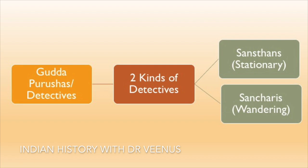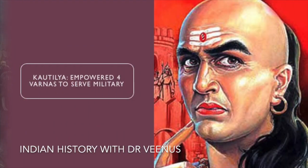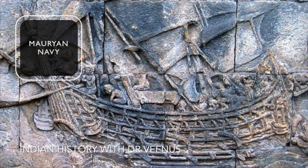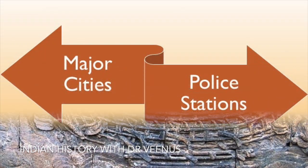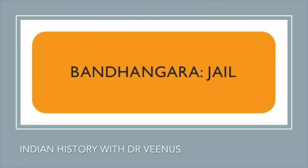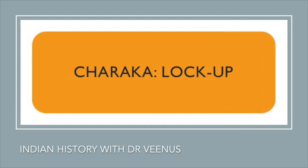The Mauryan intelligence system mentions two sorts of detectives: Sansthans, that is stationary agents, and Sancharis, those who were wandering. The Mauryan administration was notable for maintaining a large military. Kautilya empowered all four Varnas to serve in the military. Pliny claims that the Mauryans maintained a force of six lakh men. The Mauryans also had a navy. All major cities had police stations. Bandhangar was the name of the jail, while Charak was the name of the lockup.